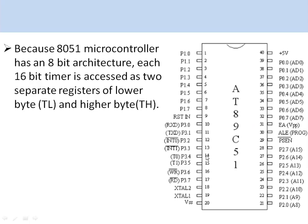The 8051 microcontroller has four ports: port 0, port 1, port 2, and port 3. Port 0 and port 3, in addition to normal I/O functions, have special functions like serial read, serial transmit, external interrupt 0 and 1, and timer 0 and timer 1.